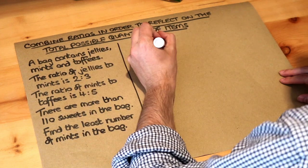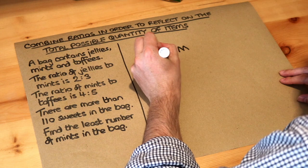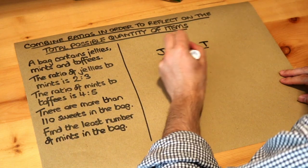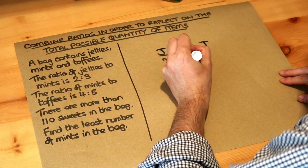So let's do what we usually do. Jellies to mints is 2 to 3. The ratio of mints to toffees is 4 to 5. Let's do that on a new line.